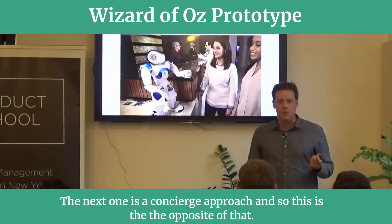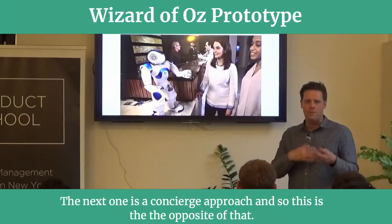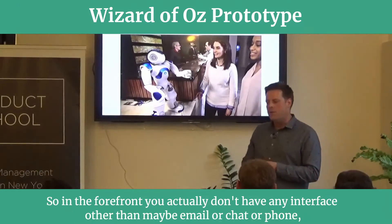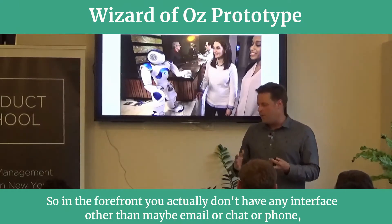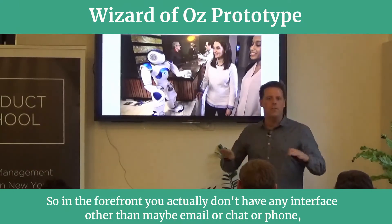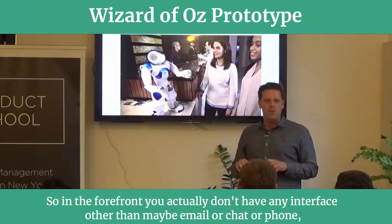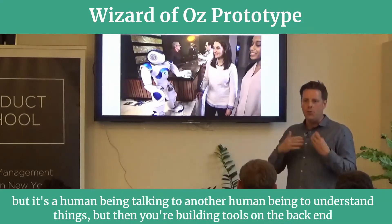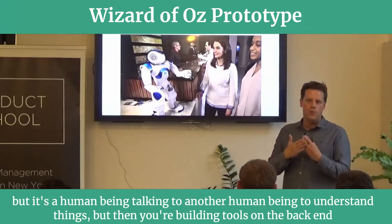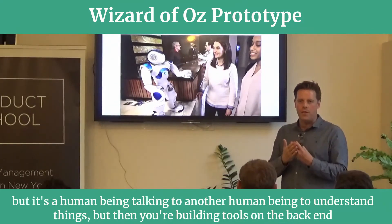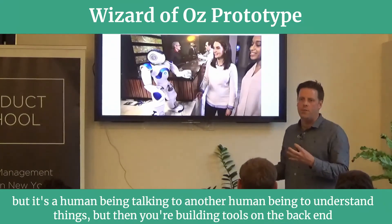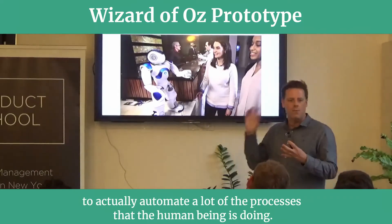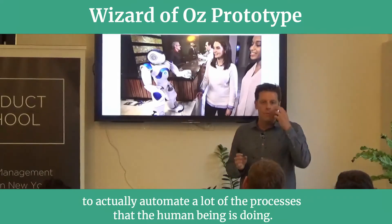And the next one is a concierge approach. This is the opposite of that. In the forefront, you actually don't have any interface other than maybe email or chat or phone. But it's a human being talking to another human being to understand things. Then you're building tools on the back end to actually automate a lot of the processes that the human being is doing.